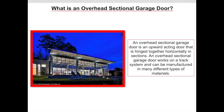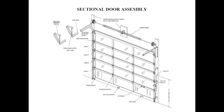Since this is an introductory course we will explain a little bit about what an overhead sectional door is and how it works. An overhead sectional door is an upward acting door that is hinged together horizontally in sections. An overhead door works on a track system like you typically see on a residential garage. These doors are being seen more and more frequently on commercial projects for a unique open-air design and to load objects in and out of the building.